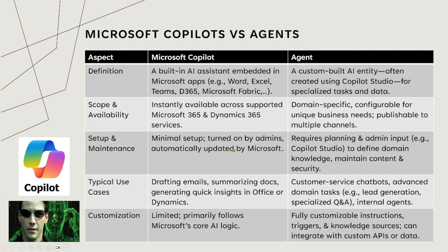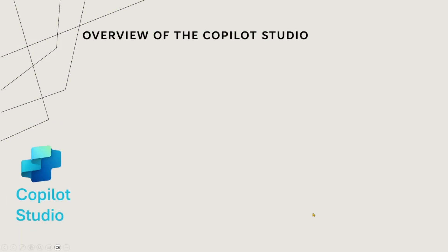Setup and maintenance: minimal setup is needed for Co-Pilot, while an Agent requires some planning — though you still don't need to know programming, you can use Co-Pilot Studio to manage these agents. Typical use cases: Co-Pilot is used for drafting emails, meeting notes, and similar tasks. For an Agent, you can create a lead generation agent or an HR helper agent for your organization — you provide your HR policy as input and the agent can answer questions about it. Customization: Co-Pilot offers limited customizations, while an Agent is fully customizable.